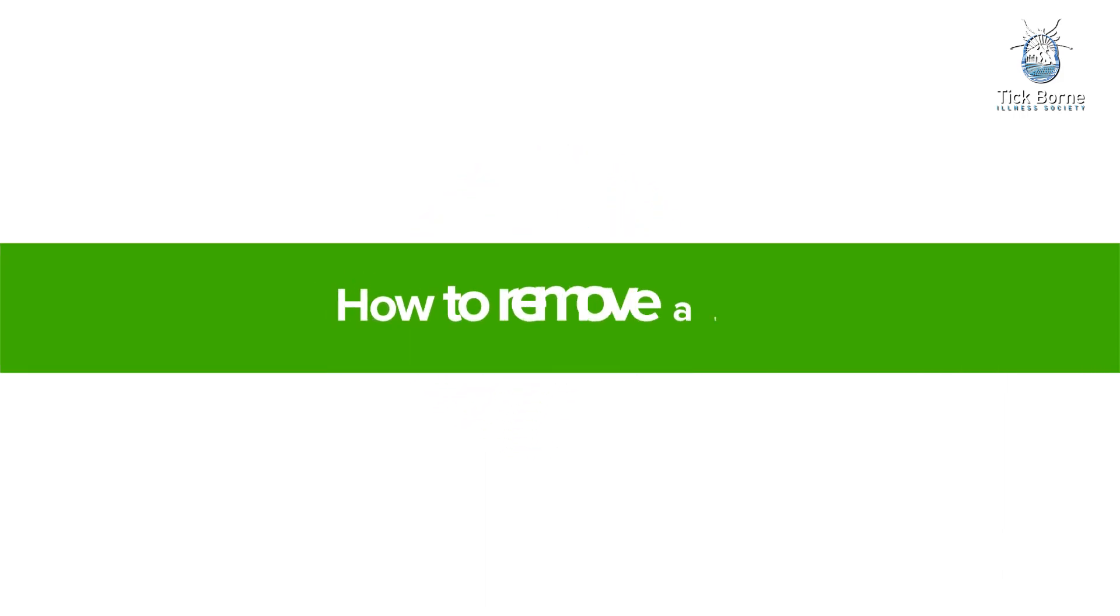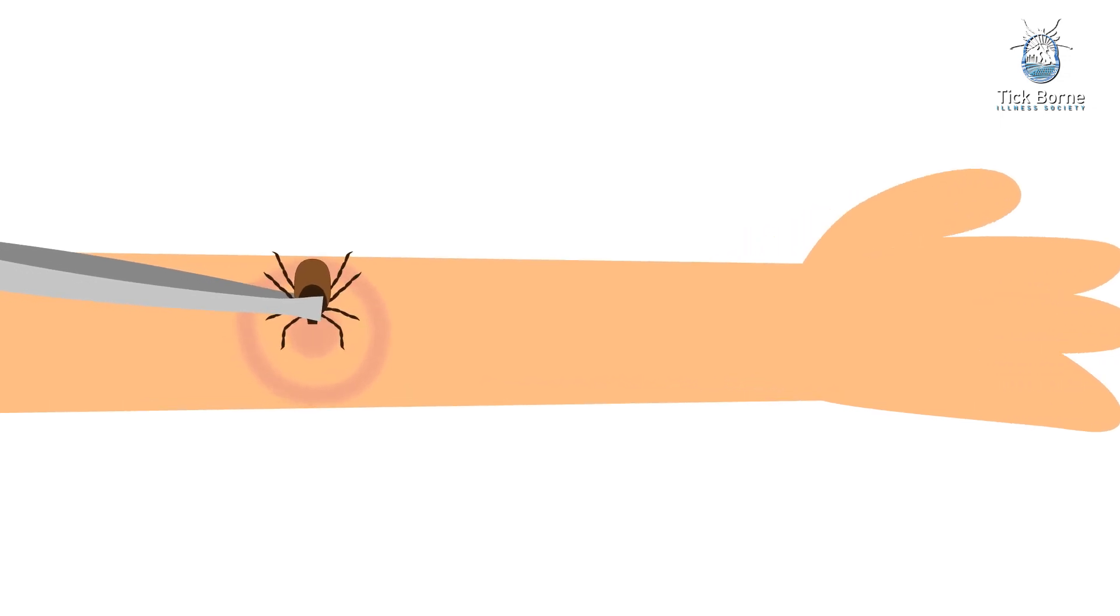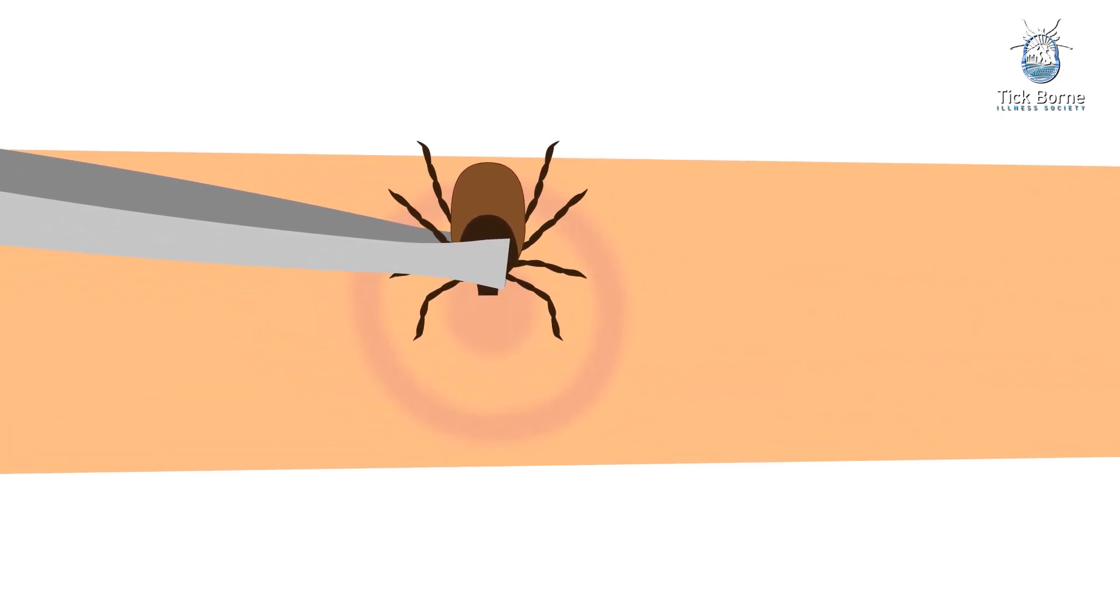How to remove a tick: Use fine-tipped tweezers to grasp the tick as close to the skin's surface as possible. Pull upward with steady, even pressure. Don't twist or jerk the tick.